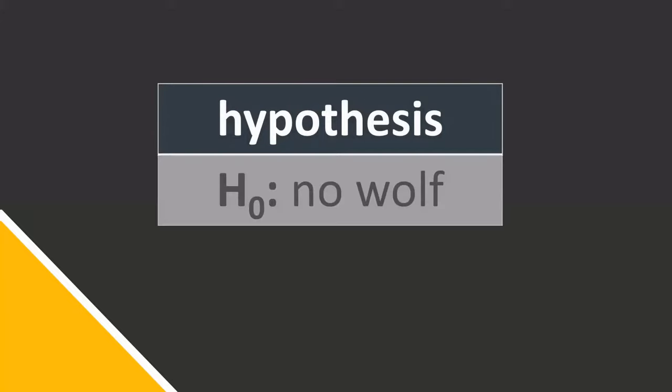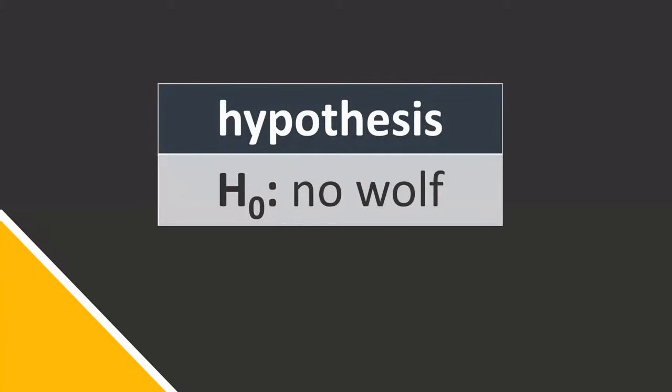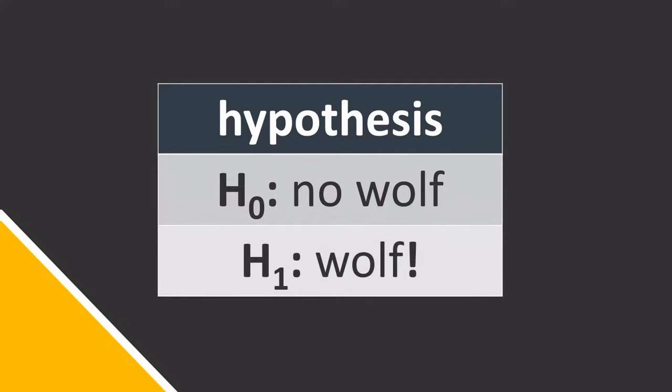In this example, the villagers null hypothesis is that there is no wolf. Their alternative hypothesis is that there is a wolf.